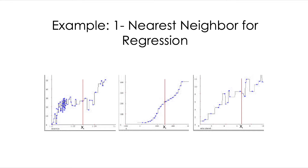In other words, this model is really complex. We get a stairs effect where all of an area is predicted according to one training point, and as soon as we move to the next point, we jump into that area for the next prediction. So it is clearly a too-complex model.